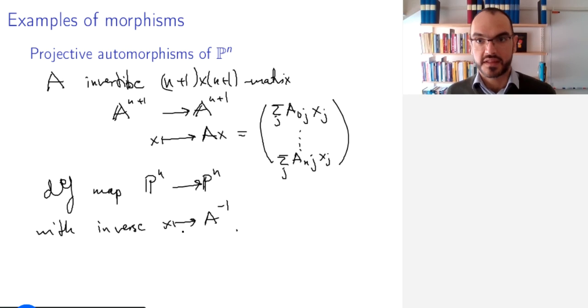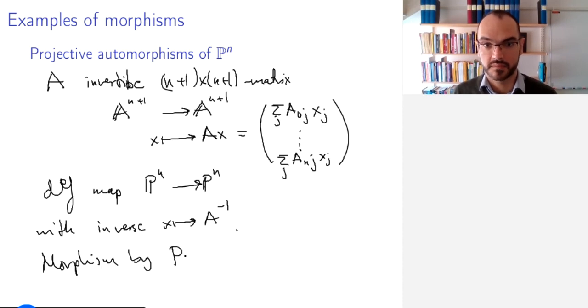And this is a morphism of varieties. So this is in fact a morphism by the previous proposition. Why is that? Well, these are homogeneous polynomials of the same degree. And if we call these f₀ to fₙ, then ℙⁿ minus the set, the vanishing set of all these fᵢ,